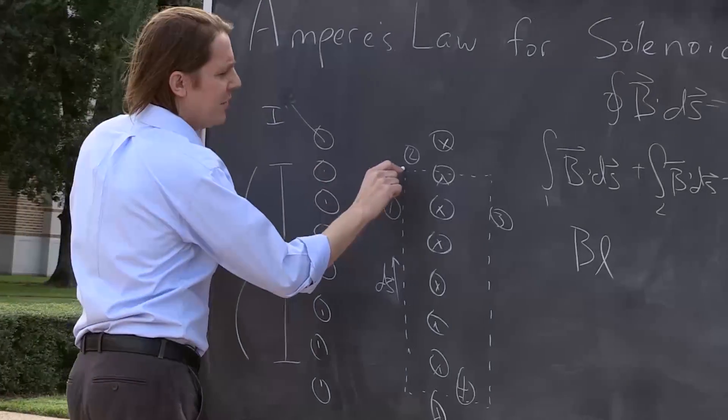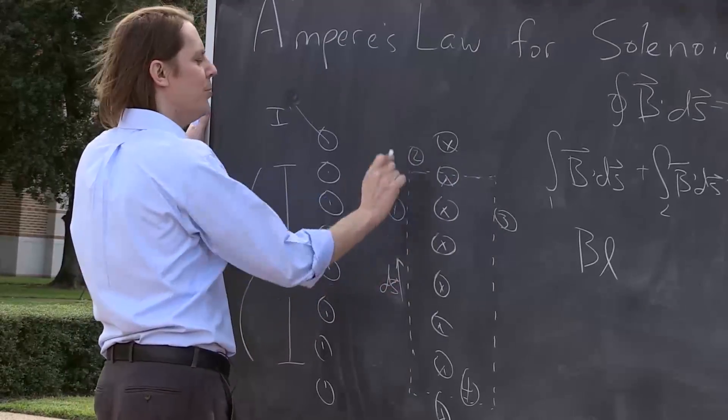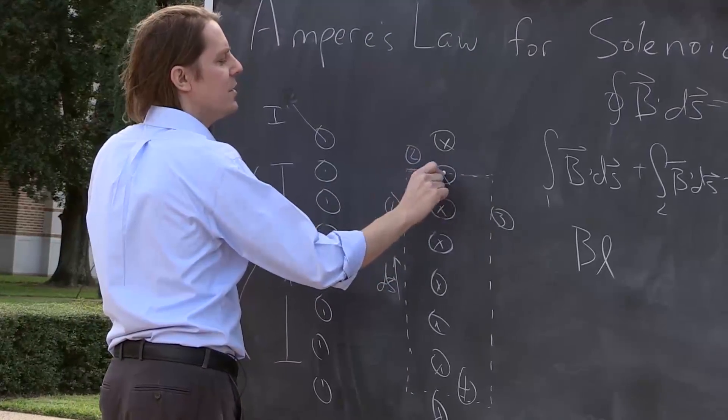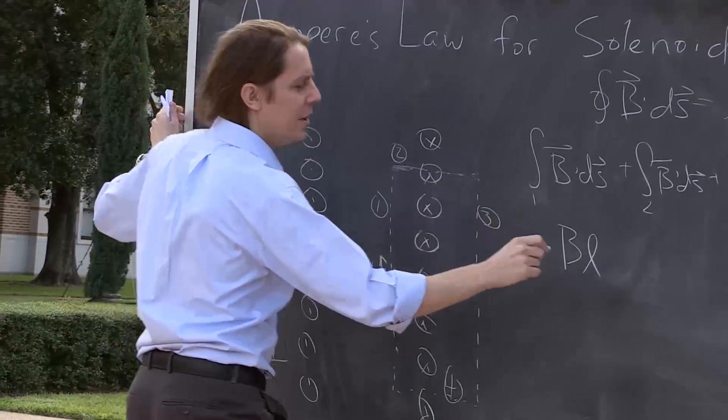The second one, two, is going this way. We know that the B field has to be this way because of the way the current loops make a field. So this one is at 90 degrees to the B field when you're inside, and the B field is very small, essentially zero when you're outside. So this one is zero.